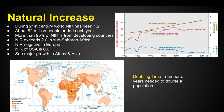In Sub-Saharan Africa, the increase rate exceeds 2.0, meaning the population is growing exponentially. In Europe, the NIR is negative — people are not really having kids and the population is actually getting smaller.